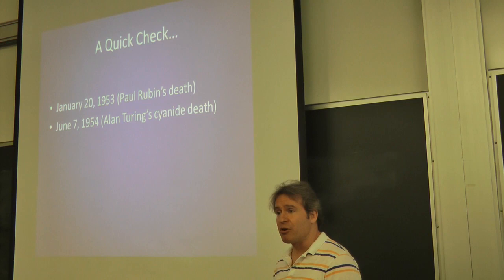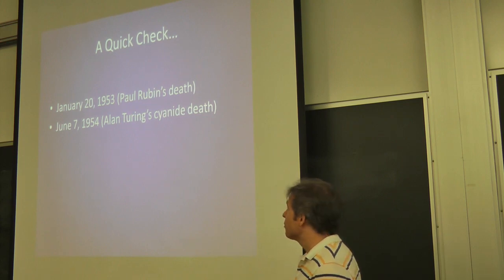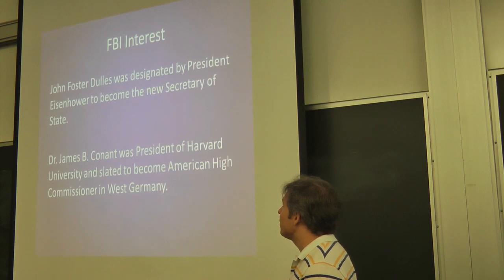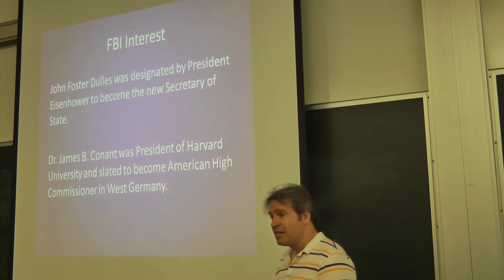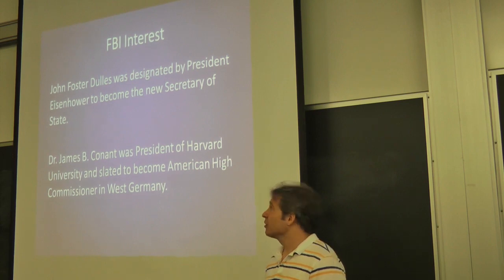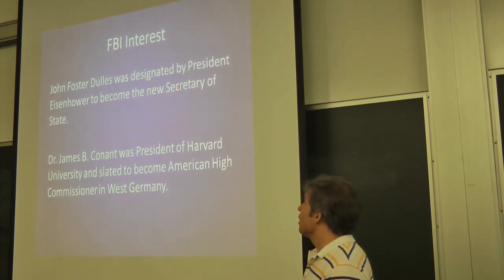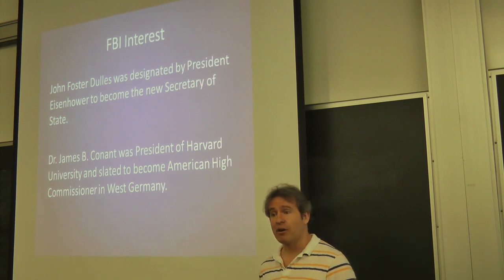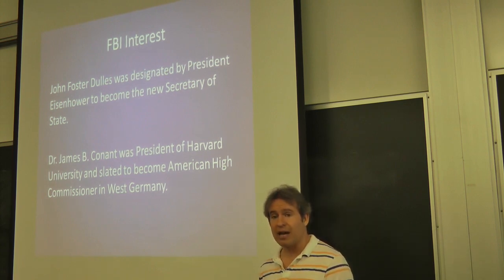I think a year and a half apart. One's a suicide. The other appears to be a murder. I think Rubin appears to be murdered. So why is the FBI interested? Well, this cipher message contained those names, Dulles and Conant. John Foster Dulles was going to become the new Secretary of State at that time. He'd already been designated, although he hadn't yet taken the role.